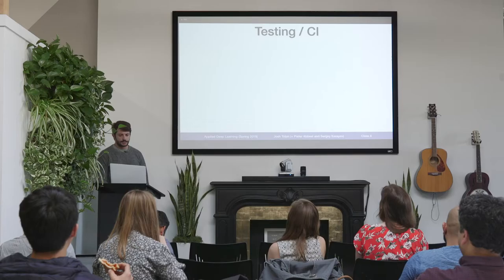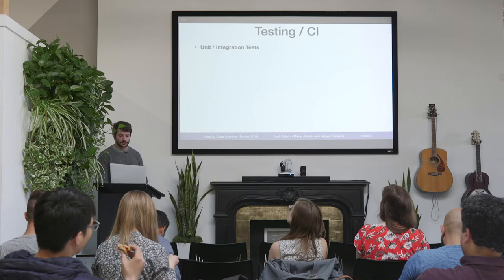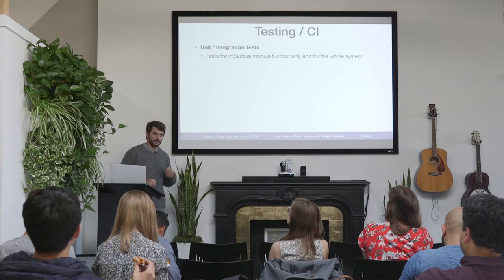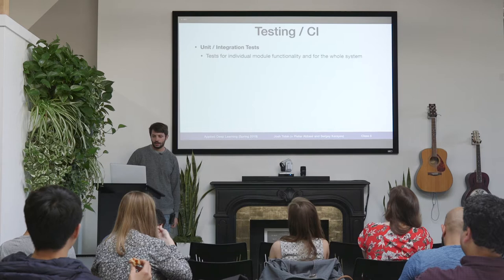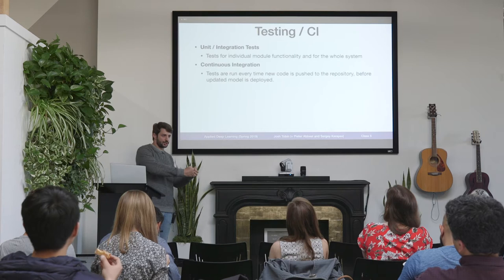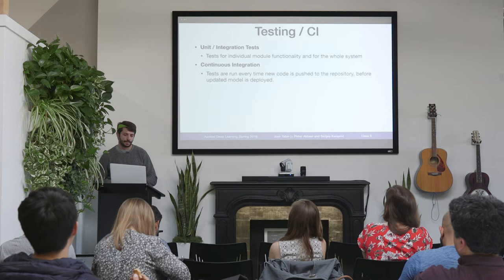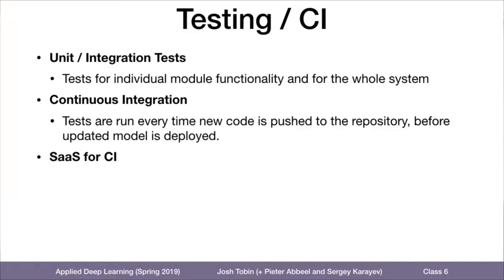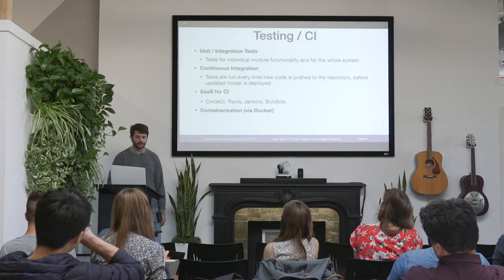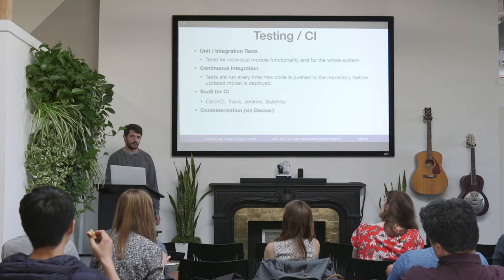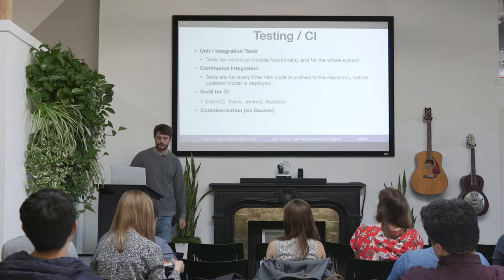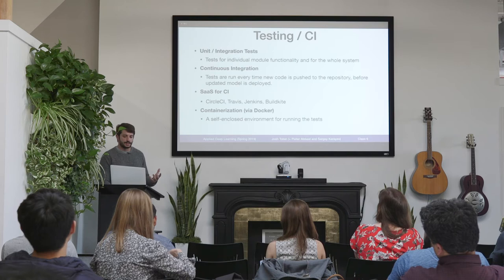Diving into testing and continuous integration — there are unit and integration tests, which means testing individual parts of your code base to make sure they continue to function when you change your code, and possibly testing your entire system. Then there's continuous integration, which means every time you push new code to your repo — before you deploy a new model into production, or sometimes before you merge that code into master — you want to run some tests to make sure that code hasn't broken what you were able to do before. There are a bunch of SaaS tools for continuous integration, none specific to machine learning. Another core idea Sergey covered was containerization — a way of managing the dependencies of your code in a CI or deployment setting.